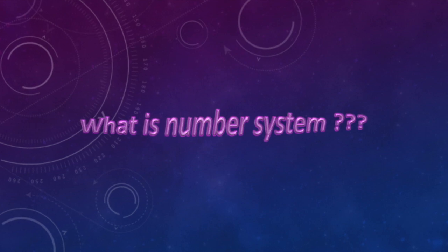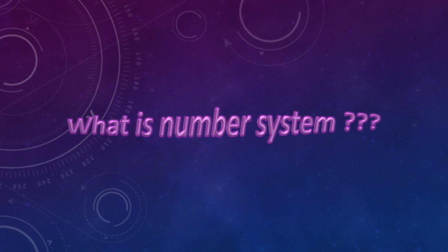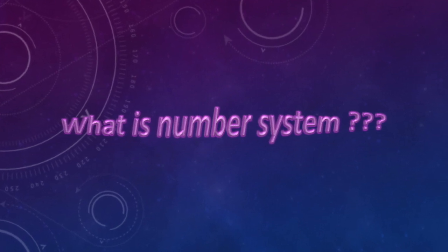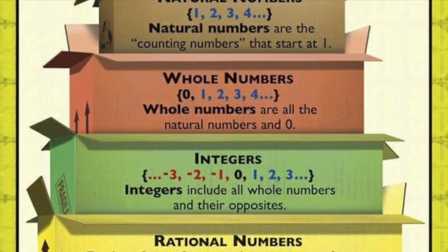What is a number system? A number system is defined as a system of writing to express numbers. It is the mathematical notation for representing numbers of a given set by using digits or other symbols in a consistent manner.